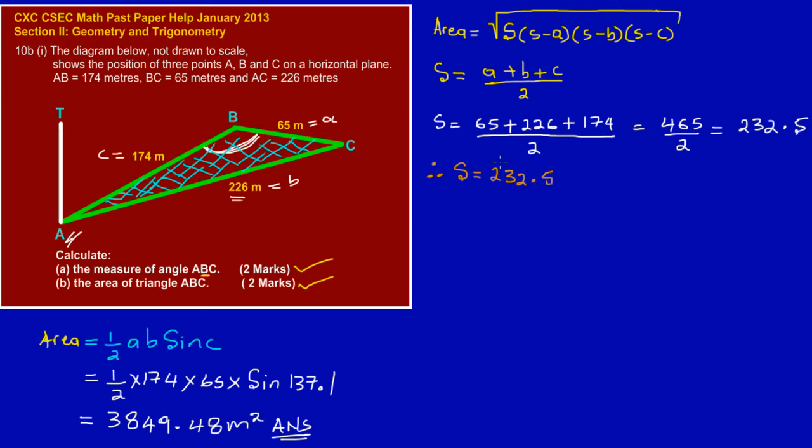Since we have found the value of s, now we can go ahead and substitute it in our formula. So our formula states that area is equal to the square root of s. Let's make a quick note: area is equal to the square root of s, and we found s to be 232.5, multiplied by, so let's open bracket, multiplied by s again, so we're going to have to put back 232.5.